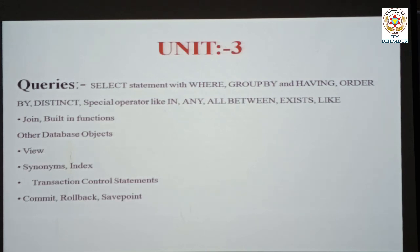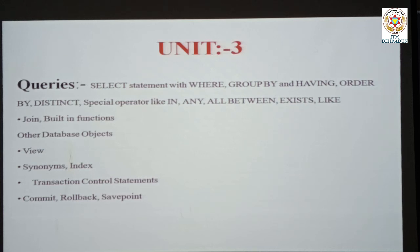The next topic in unit three is JOIN operations — if you want to join two tables, you use a JOIN built-in function. We also cover views and transaction control statements such as COMMIT (which means save), ROLLBACK (which is like undo), and SAVEPOINT, which lets you set a save point so you can retrieve data at a later stage.